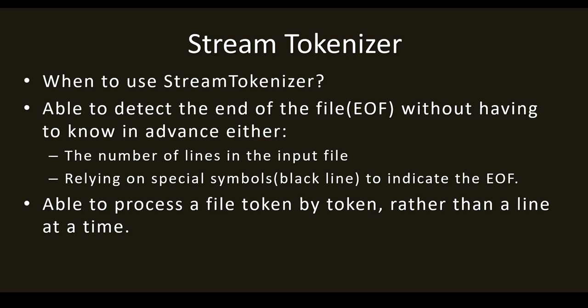In this case you are going to use stream tokenizer. It is able to process a file token by token rather than a line at a time. That is the difference between string and stream tokenizer. In string tokenizer you take line by line and count the tokens. Here, you take the whole file and count token by token — the full file is taken as a whole and the number of tokens are counted.